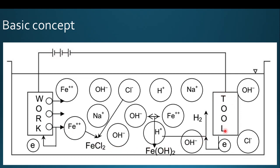At the negative terminal, electrons are released. The Fe²⁺ ions combine with Cl⁻ ions to form metal chlorides, and Fe²⁺ ions combine with OH⁻ ions to form ferrous oxides. These ferrous chlorides and ferrous oxides are considered sludge — waste materials that float on the surface.